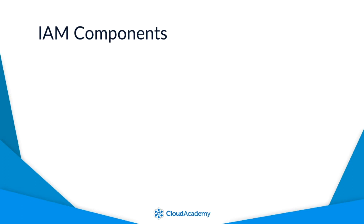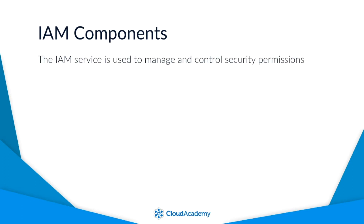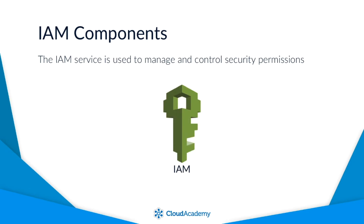Let me explain what the service actually does. The AWS IAM service is used to centrally manage and control security permissions for any identity requiring access to your AWS account and its resources. This is achieved by using different features within IAM, consisting of users.